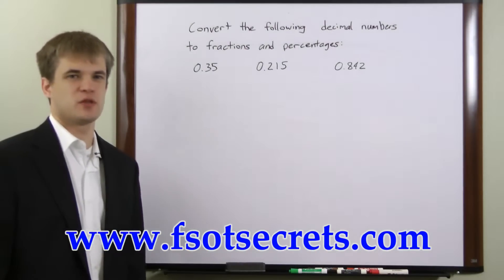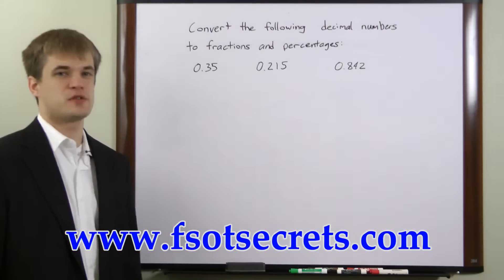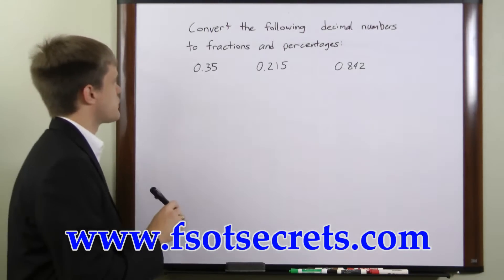The processes for converting decimal numbers to fractions and percentages are both fairly simple, so I'll demonstrate both on each of these examples here. First we have 0.35.